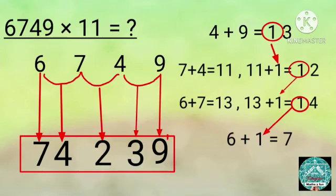Then add 7 and 4. 7 plus 4 equals 11. 11 plus 1, that is carried, equals 12. Write 2 to the left of 3 and carry forward 1 to the next sum.